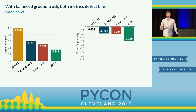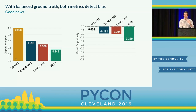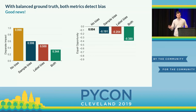When ground truth is balanced, things look pretty good. On the left is disparate impact — a value close to one indicates no measured unfairness. On the right is equal opportunity — a value close to zero means no measured unfairness. The different bars represent different datasets: no injected bias, sample bias, label bias, and both types of bias. Both metrics measure no unfairness when we haven't added bias, and as we start adding different types of bias, the metrics report more measured unfairness. So far, so good — the metrics are doing what we want.